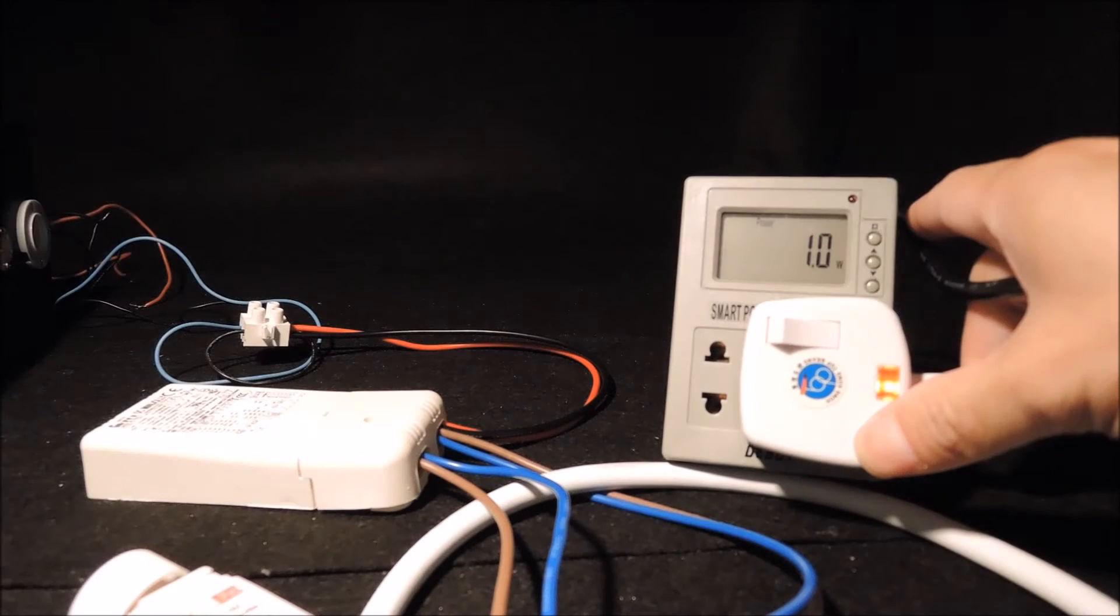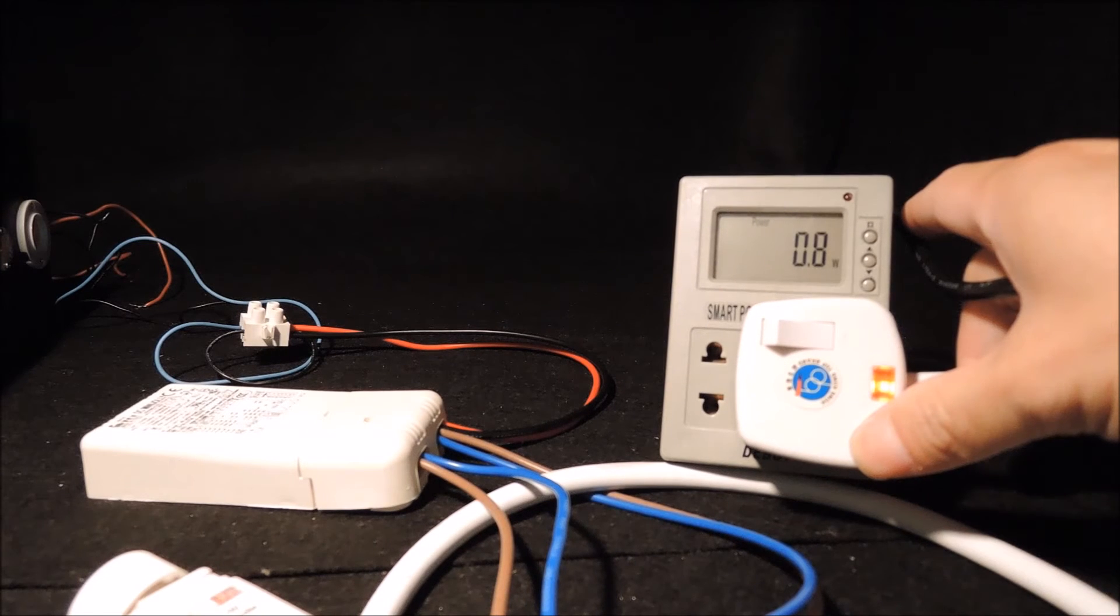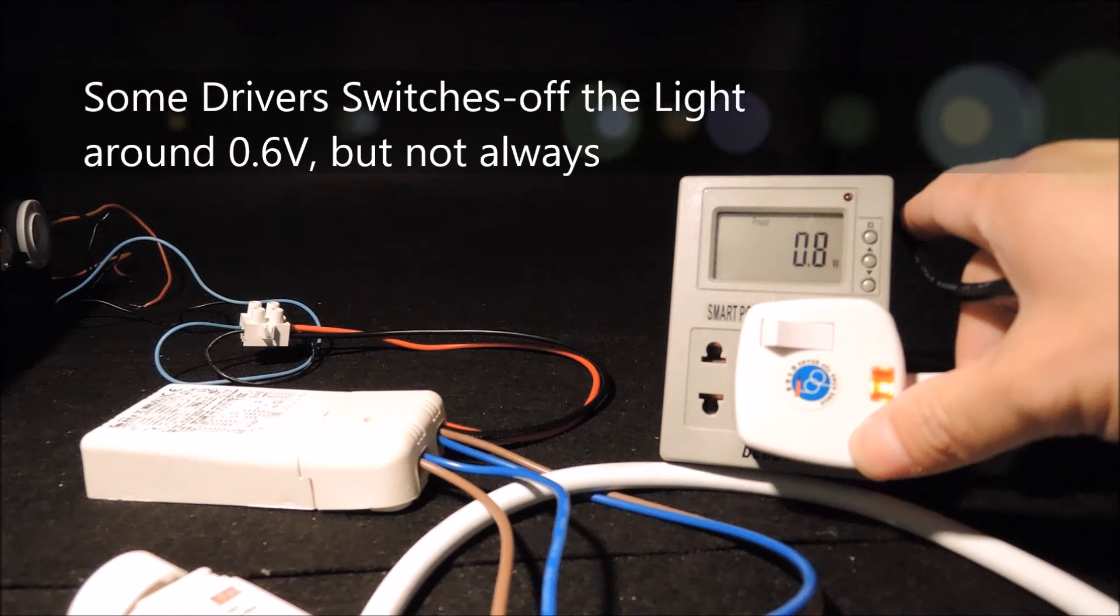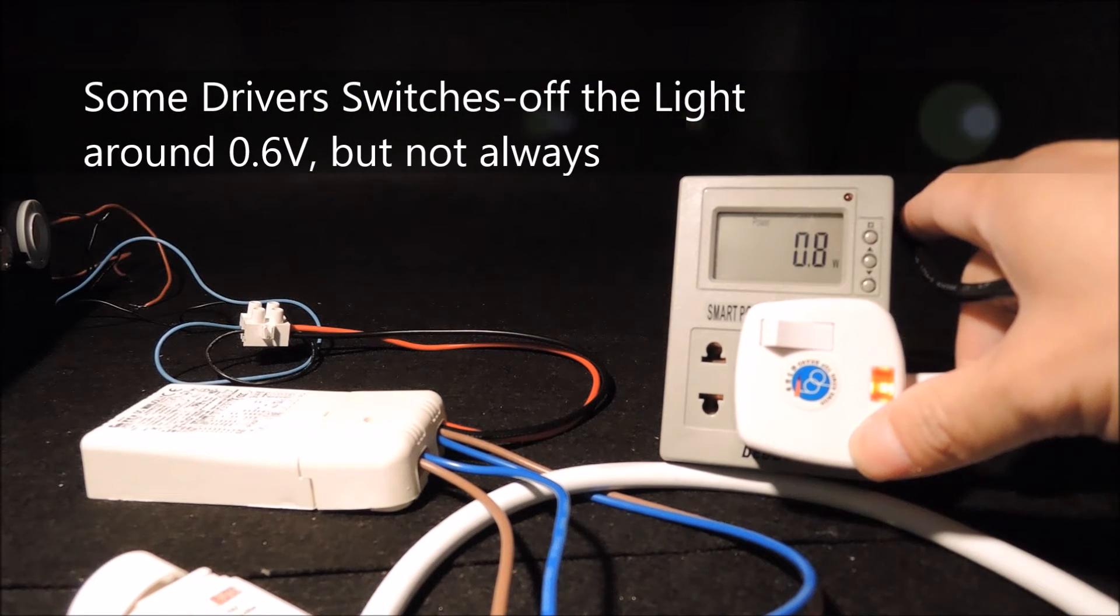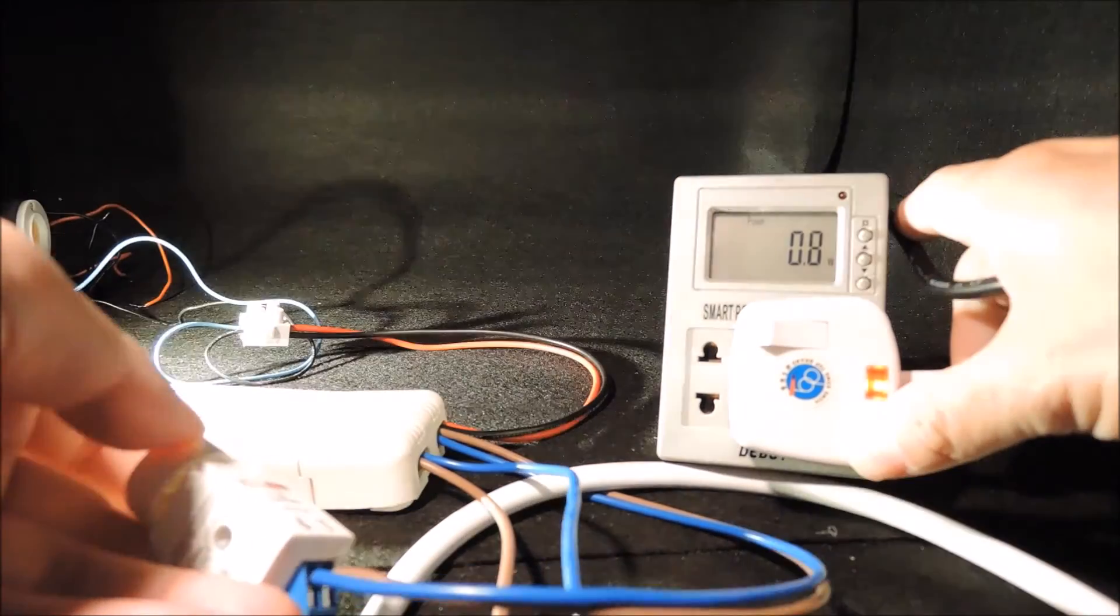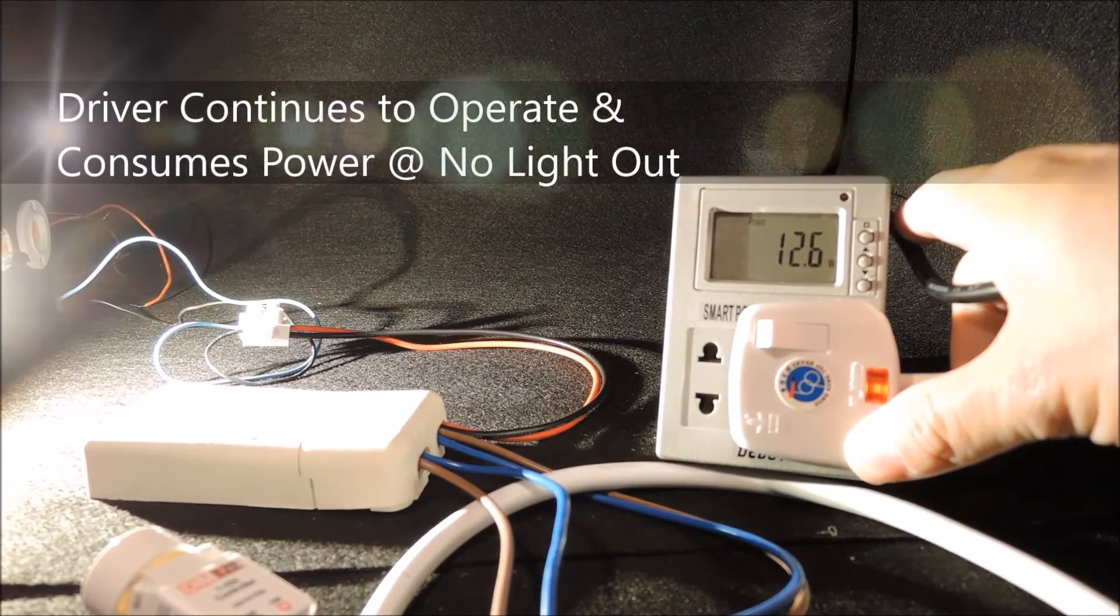The light switch-off behavior should only be interpreted as a way of how the driver responds to control input change, and from our experience, some drivers would switch off the light when the input hits around 0.6V. At no light output, the driver must still be working, so that when we re-adjust the light control input, it can pick up quickly and adjust the light output accordingly.